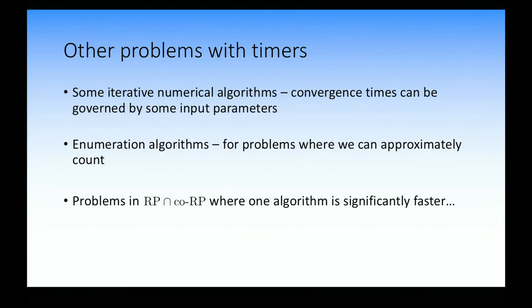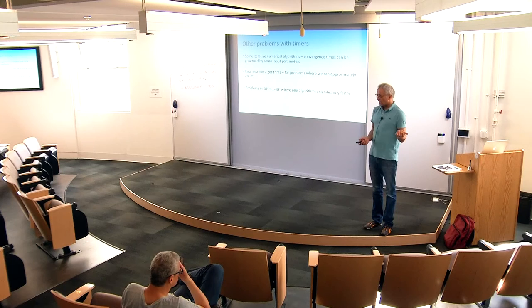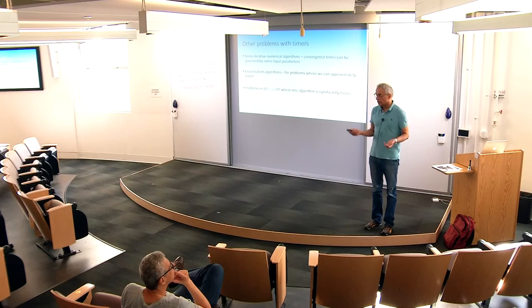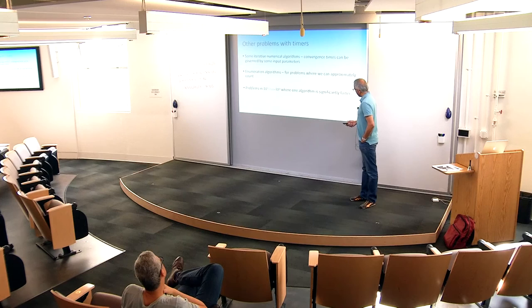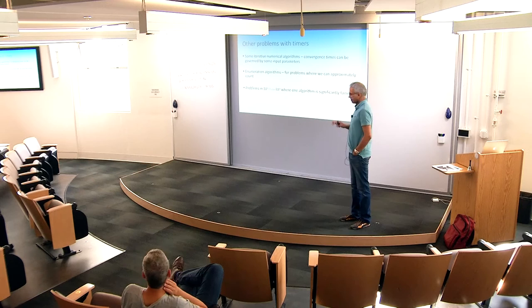Some other problems with timers: for iterative algorithms, like finding fixed points, you can sometimes get a lower bound on the number of iterations based on the derivative of the function for which you're finding the fixed point. For numerical analysis algorithms, you have lower bounds for convergence, so you can design timers by quickly analyzing these lower bound conditions. For enumeration algorithms — enumerating all maximum matchings in a graph — you can get a timer by approximately counting the objects you want to enumerate. You can also get timers for problems in RP or co-RP if one side is much faster than the other.